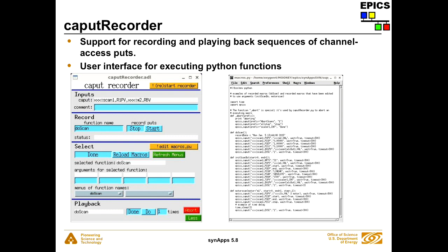Here's how it works: you type in the function name you want, press start, and from then on everything you do is monitored by CA put recorder. When you're done with your operation, you press stop, and what you did shows up as a Python function in that file. You can then refresh the menus and the function name will appear. You can select it and say 'do it again' or repeat it several times. As recorded, macros won't have any arguments — they'll just do exactly what you did. But you can edit the function and add your own arguments and default values, so you can, for example, choose a different motor.